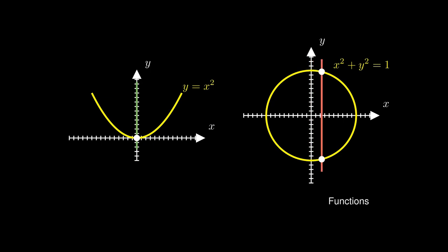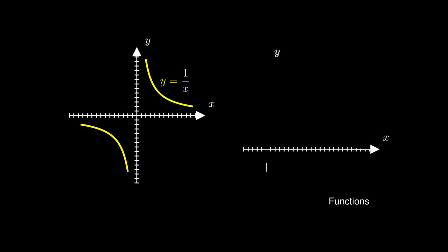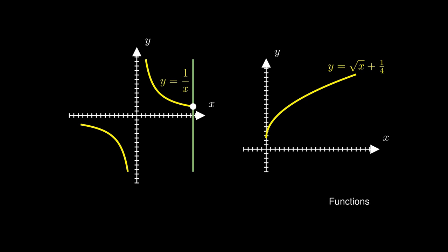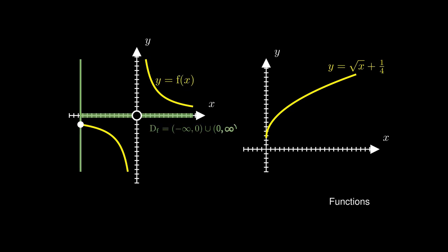However, in the case of a circle, one input may produce two outputs, and therefore a circle is not a function of x. Consider the functions 1/x and the square root of x plus a quarter. If we draw a vertical line at the center, it would not intersect the curve at all, but nudging it slightly left or right always produces intersections. The inputs that give us at least one output are known as the domain of the function, denoted by D sub f.